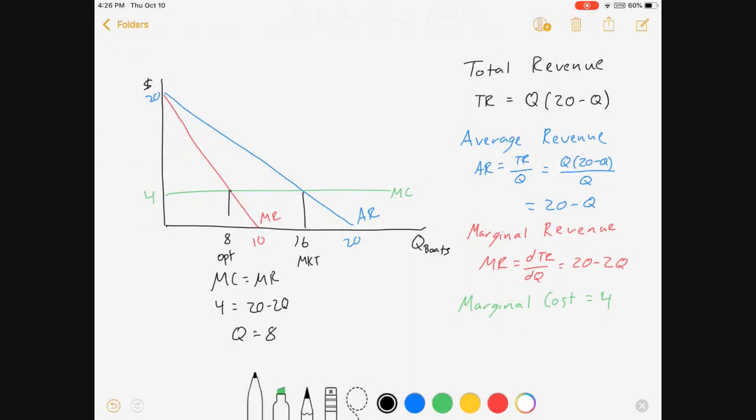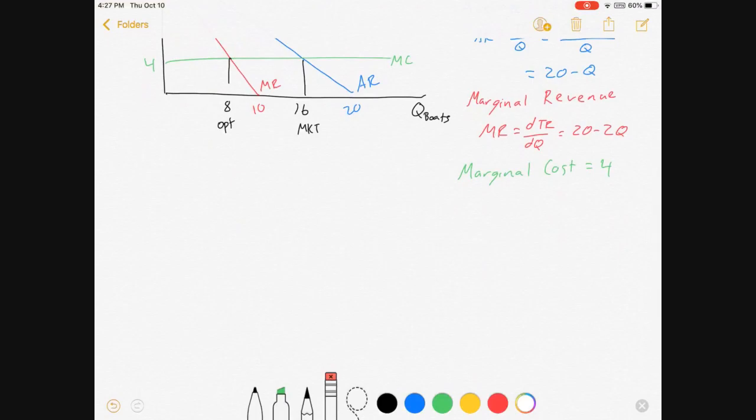So we've got our optimal quantity of 8 and our market quantity of 16. And that gives us a brief idea of how you might solve one of these problems. Now, we could transfer to a more difficult version of it.